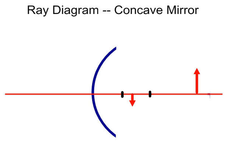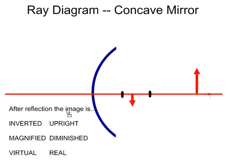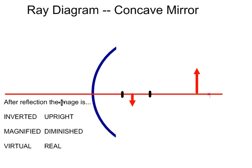When we describe images after they've been reflected, we use some terms. First of all, you can see that the new red arrow is upside down, and we call that inverted. I'm going to circle inverted to show that the reflected image is inverted.